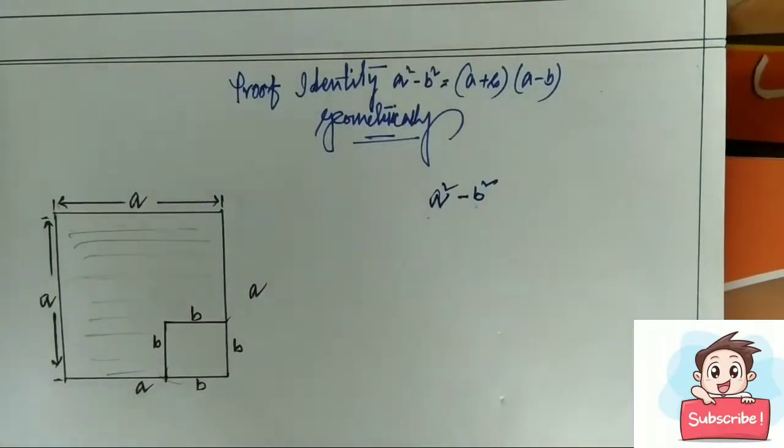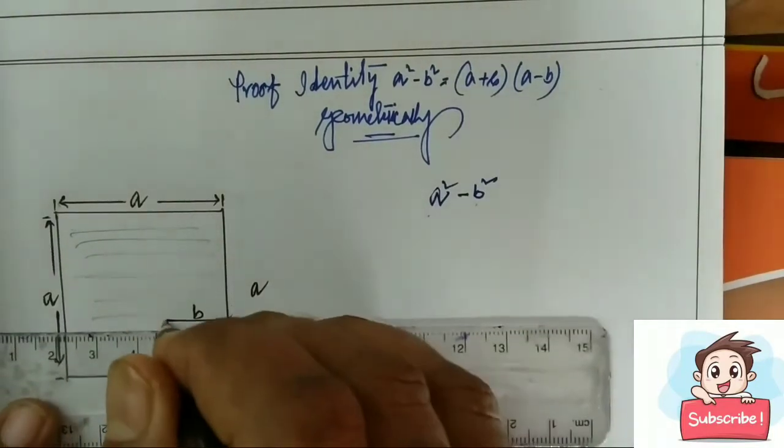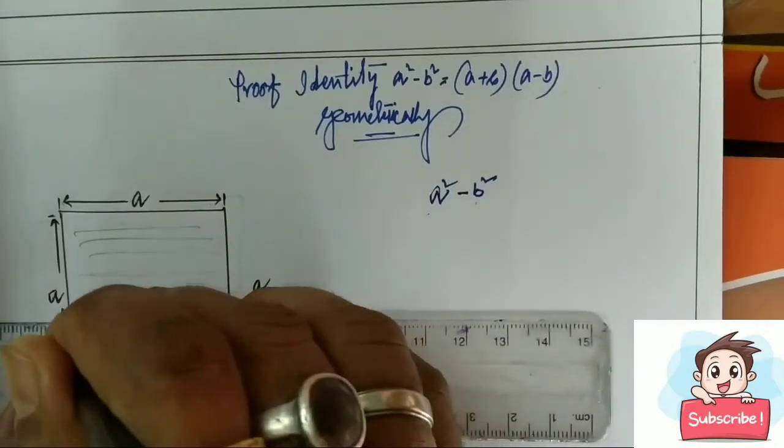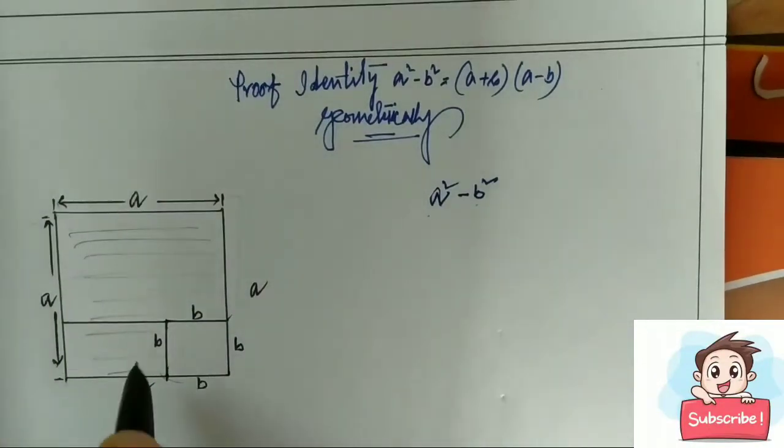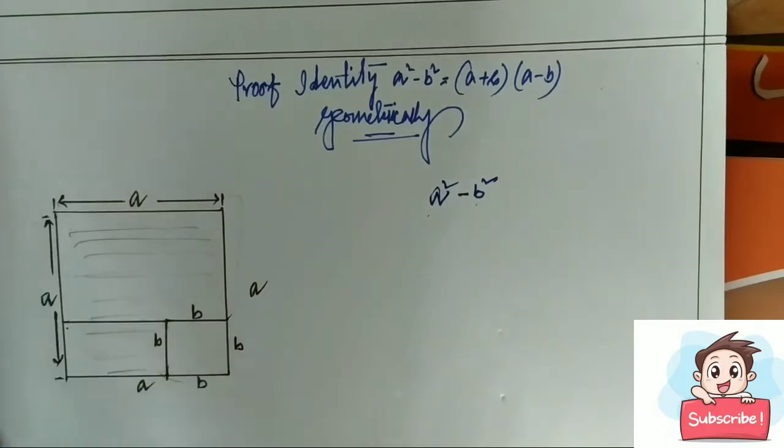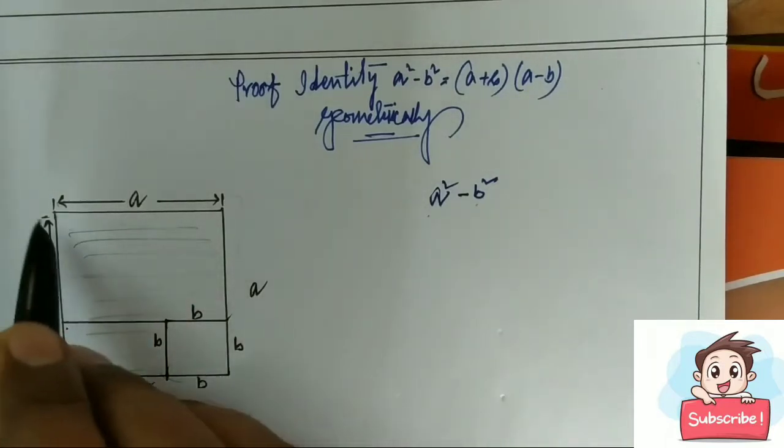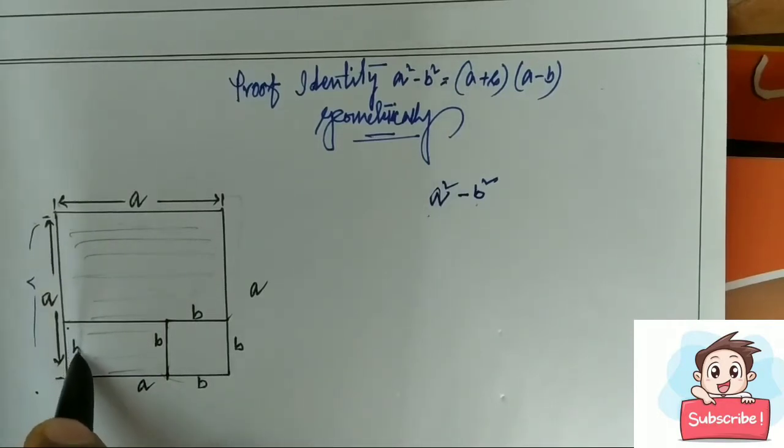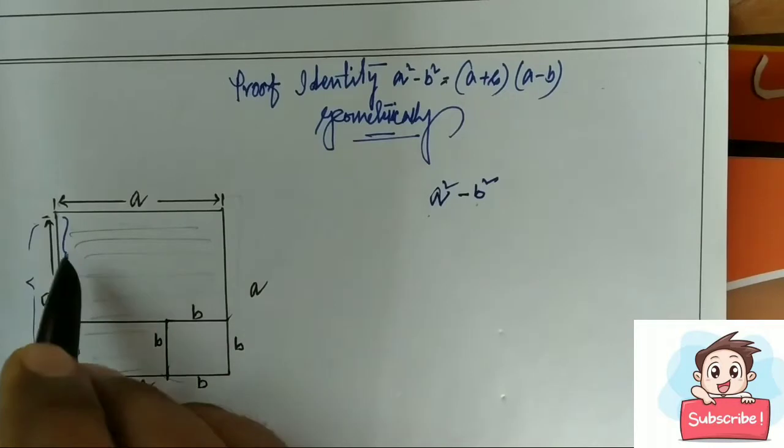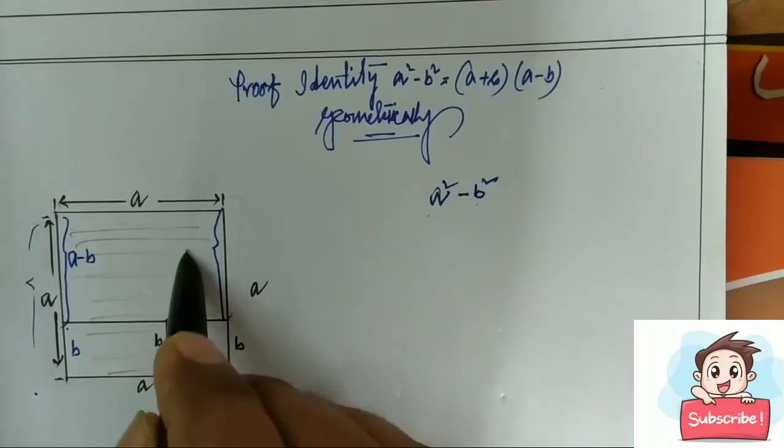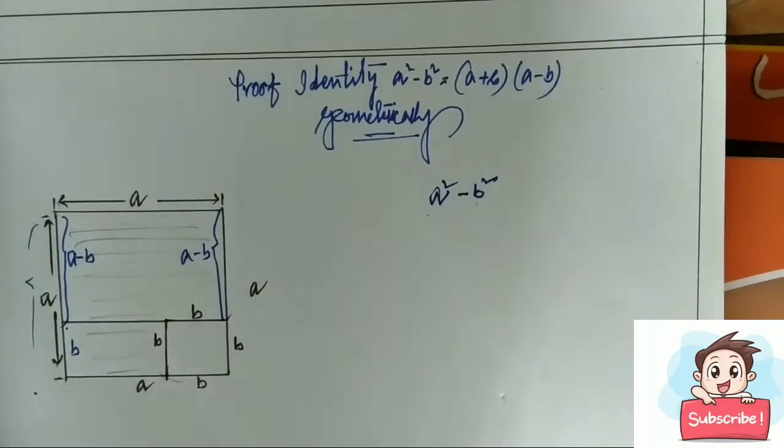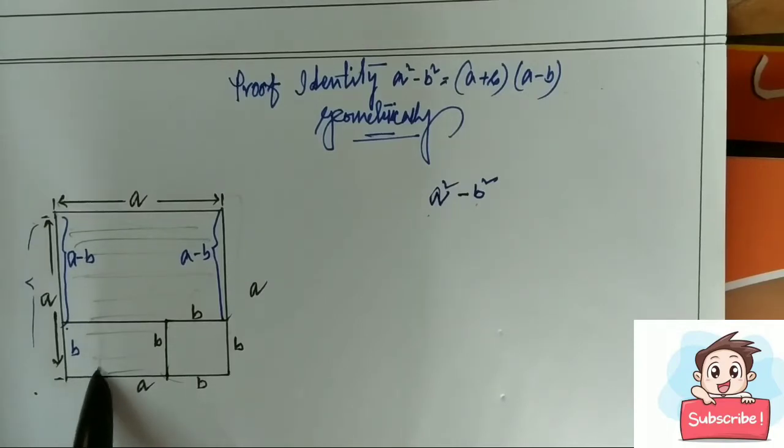We divide this part into two parts. What is the length of this part? The total is a, and this one is b. So this is a minus b. This is a minus b, and a minus b.